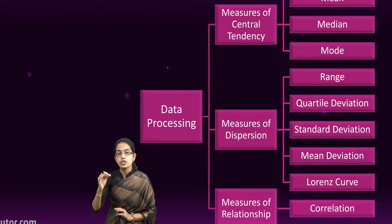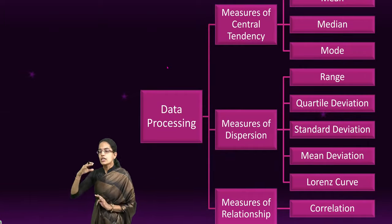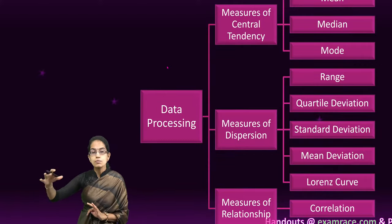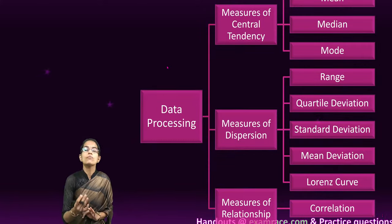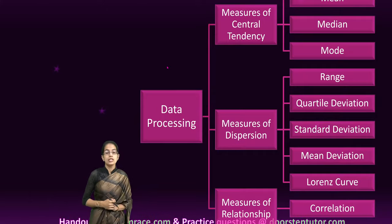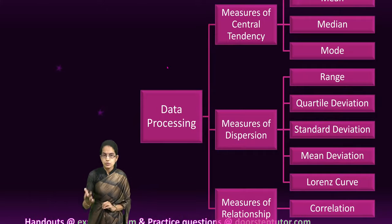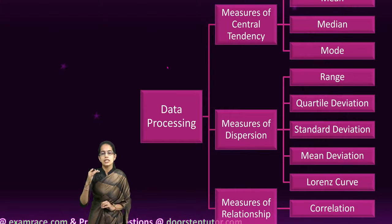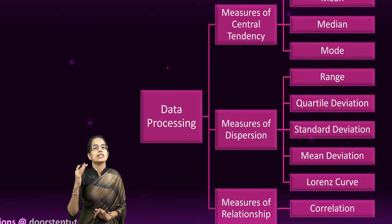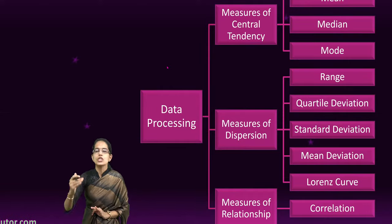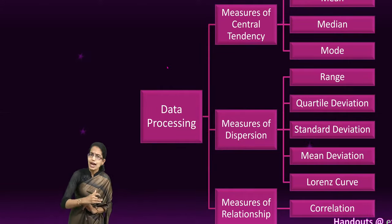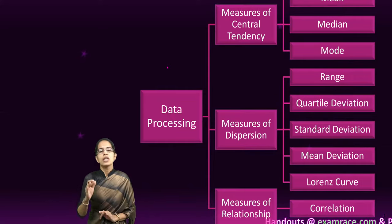The next is measures of dispersion. Dispersion actually explains how far or how dispersed the data is from the mean. This measure of dispersion can be understood under five basic criteria: range, quartile deviation, mean deviation, standard deviation, and Lorenz curve. And finally, we understand the method of relationship.